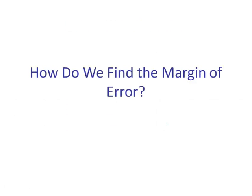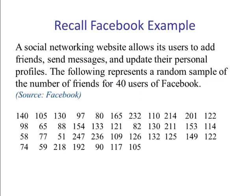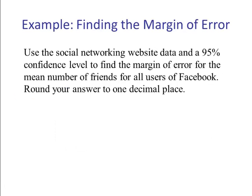So how do we compute the margin of error? If we look back at our Facebook example from the previous video, we have 40 users of Facebook. We're going to use the social networking website data and a 95% confidence level to find the margin of error for the mean number of friends for all users of Facebook. We're going to round to one decimal place.